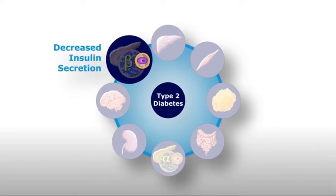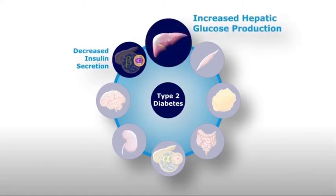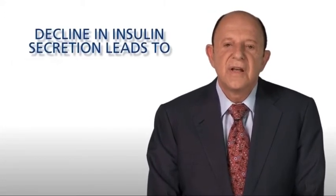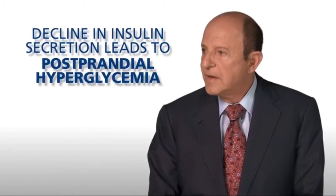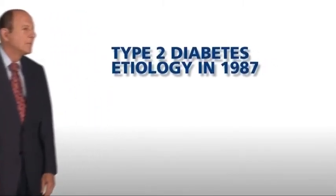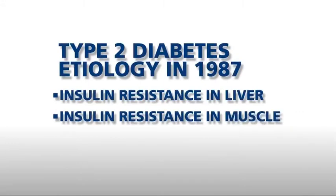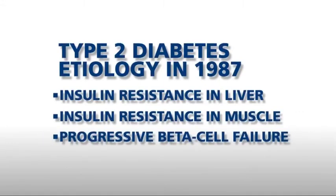However, with time, the ability of the beta cell to secrete insulin declines. As the insulin response declines, the insulin resistance in liver becomes manifest by an overproduction of glucose throughout the sleeping hours, which accounts for fasting hyperglycemia. Following a meal, the majority of the carbohydrate in the meal, particularly glucose, is taken up and disposed of in the muscle. In the face of muscle insulin resistance, the decline in insulin secretion leads to postprandial hyperglycemia. Thus, in 1987, the etiology of type 2 diabetes was quite simple: insulin resistance in liver, insulin resistance in muscle, and progressive beta cell failure.